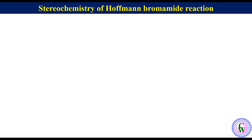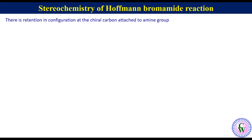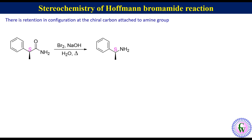Stereochemical outcome of the Hofmann bromamide reaction: if the amide is attached to a chiral center, there is no change in configuration — that is, there is retention of configuration at the chiral center attached to the amine group. For example, (S)-2-phenylpropanamide upon Hofmann bromamide reaction gives (S)-1-phenylethanamine.